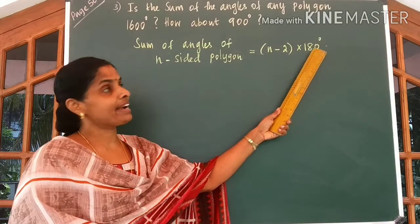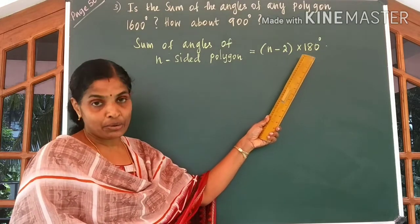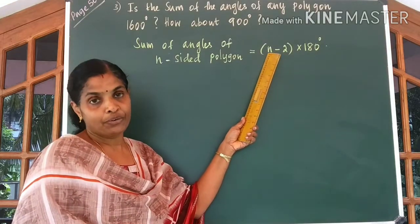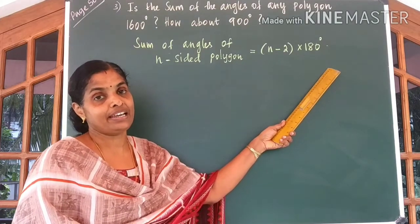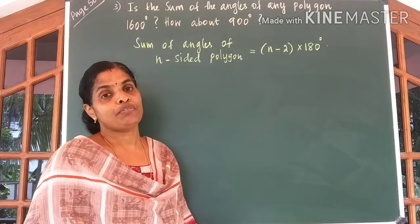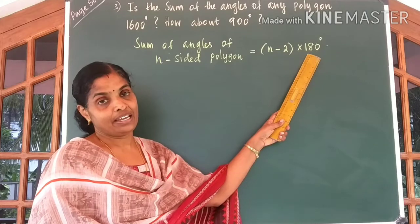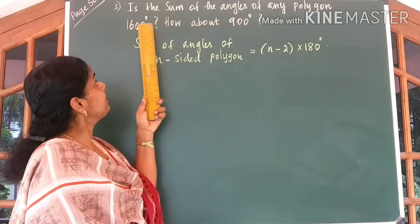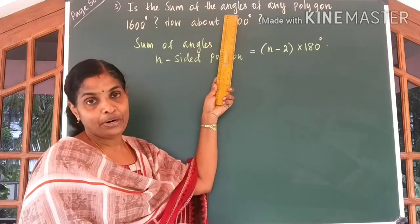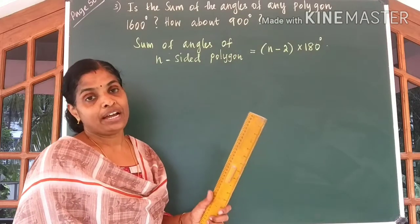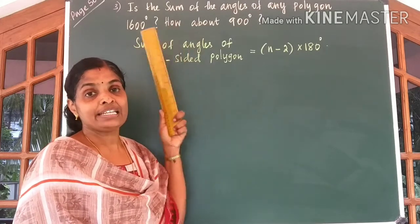For a triangle, 3 minus 2 into 180 equals 180 degrees. For a quadrilateral, N is equal to 4, so 4 minus 2 into 180 gives us 360 degrees. We can say the sum of angles of a polygon will always be a multiple of 180 degrees. So, to find out whether a given angle can be the sum of angles of a polygon, it is enough to check whether the given number is a multiple of 180 degrees.